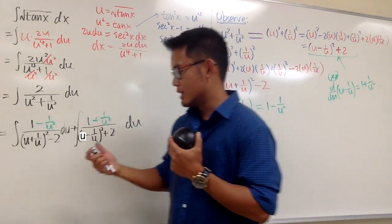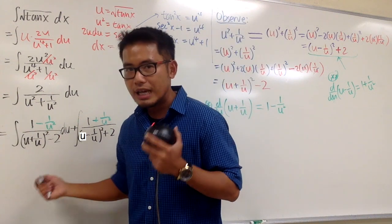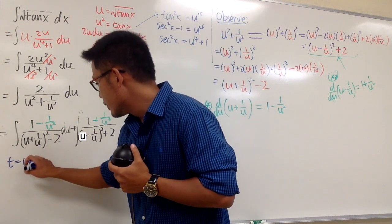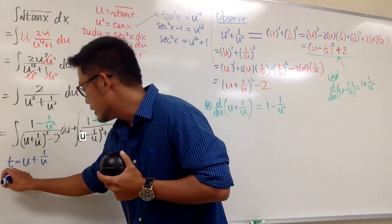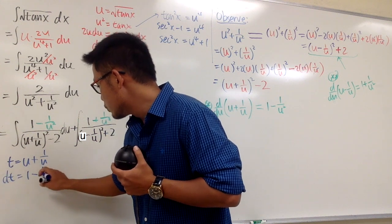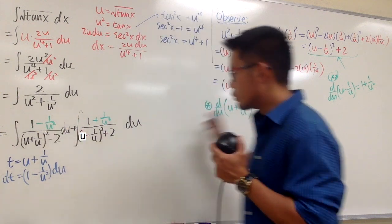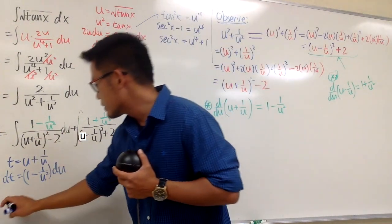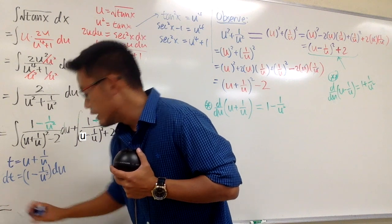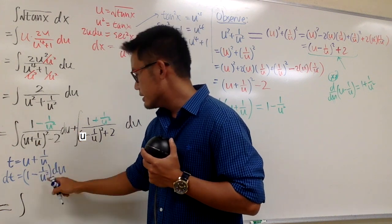For the first integral I'll do a t-substitution. Let t equal the inside: t = u + 1/u. Then dt = (1 − 1/u²) du. Now you see this matches the numerator of the first integral. So the first integral becomes the integral of dt / (t² − 2).